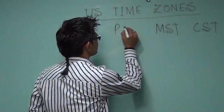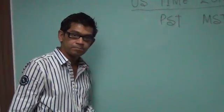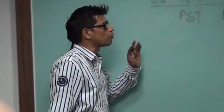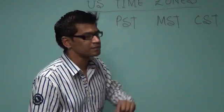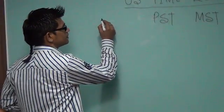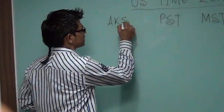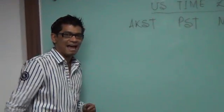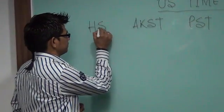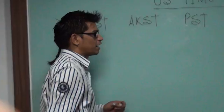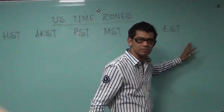Then we have PST, which is Pacific Standard Time. Besides these four time zones, we also have two other time zones: Alaskan Standard Time and Hawaiian Standard Time.